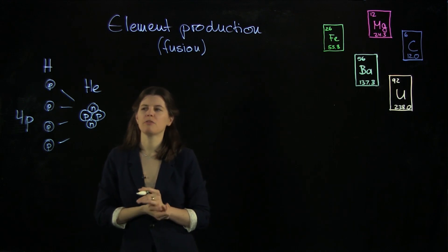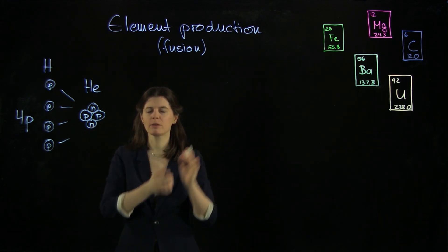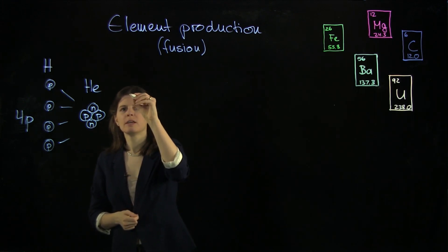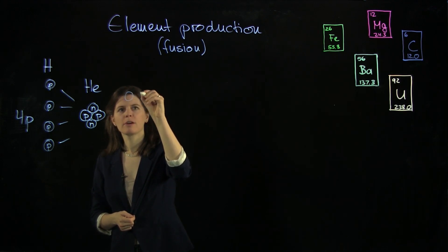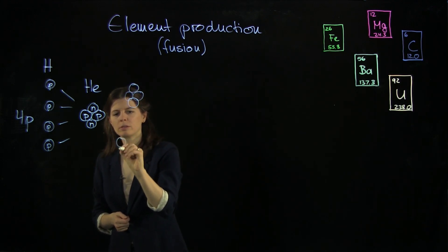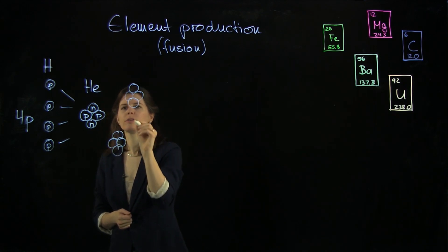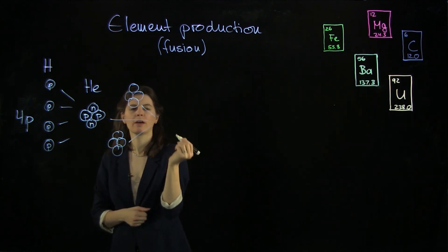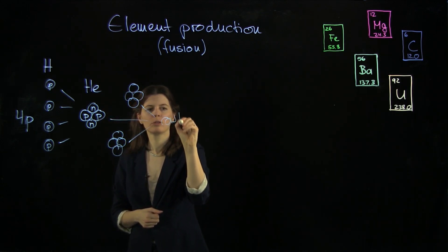This kind of tunneling effect is important for all subsequent fusion processes. Namely, if we have another helium here, and another one, so we'll put all of those together, we're going to get a carbon nucleus.